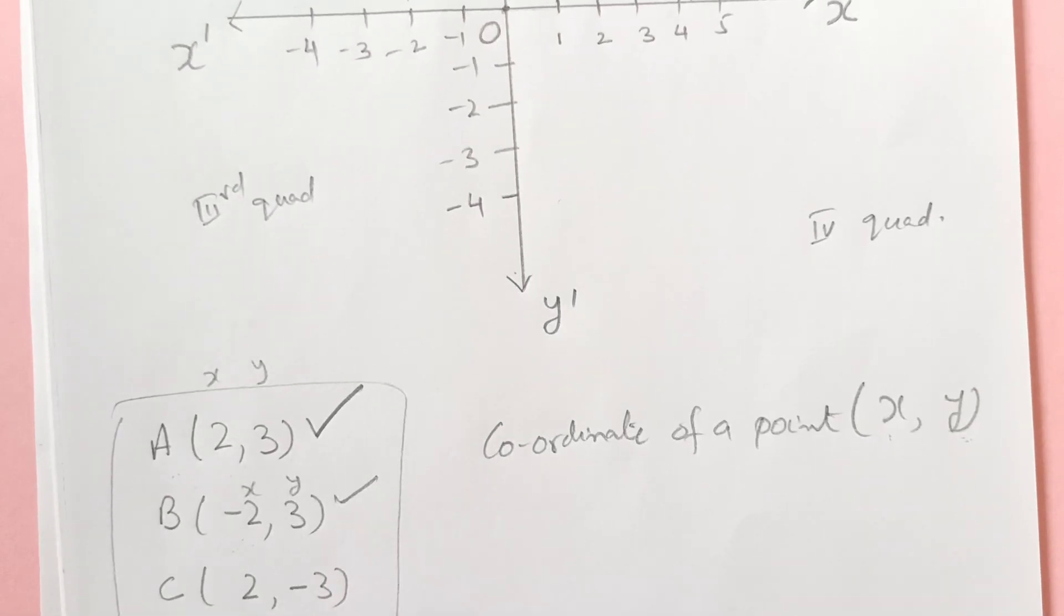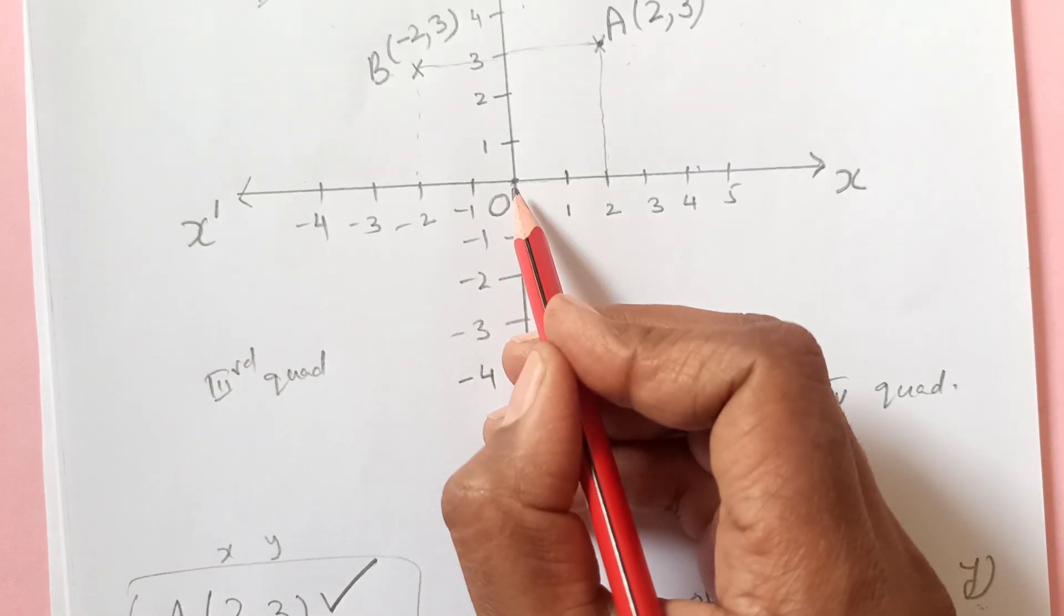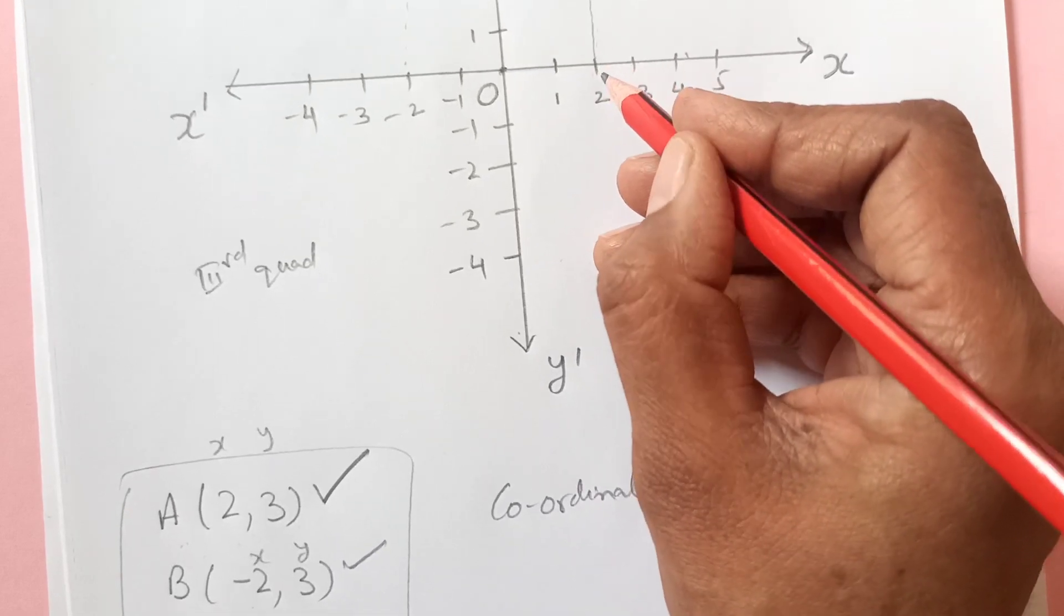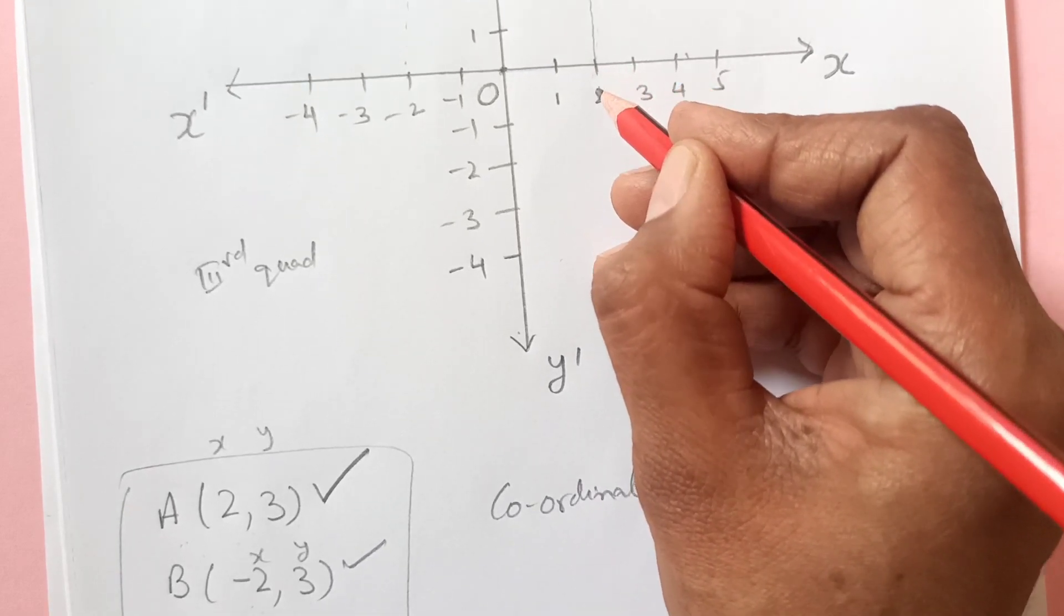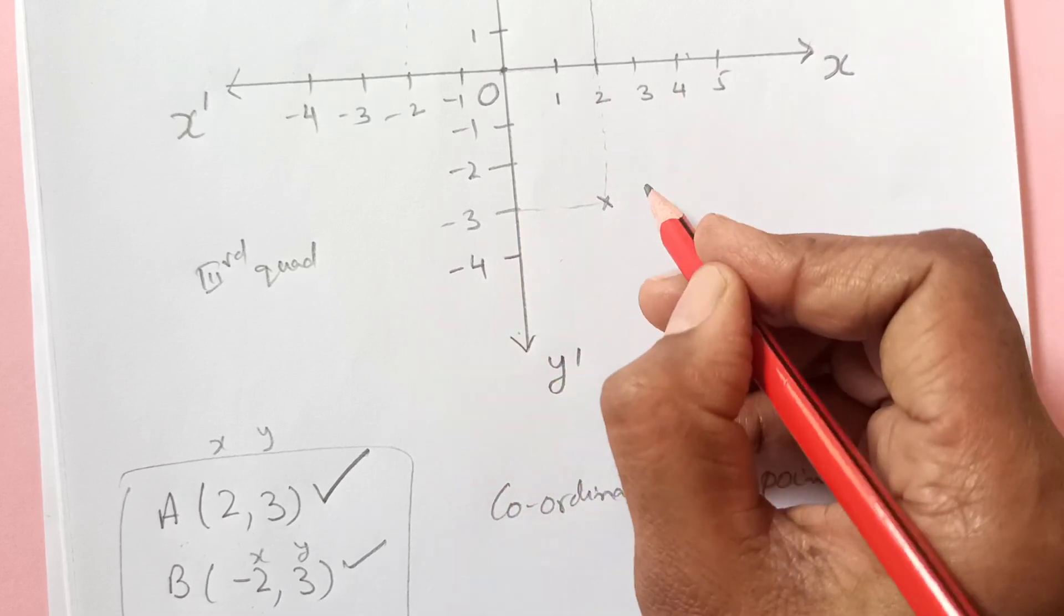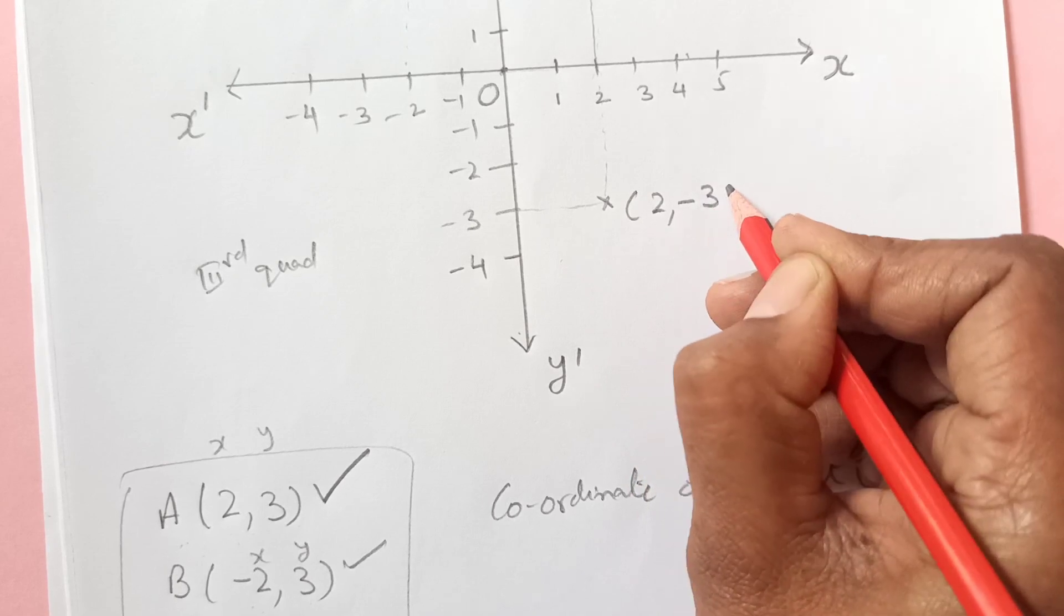Now the third one is (2, -3). x is 2 and y is negative 3. x equals 2 is here and y negative 3 going down there. So this is point C which is (2, -3).